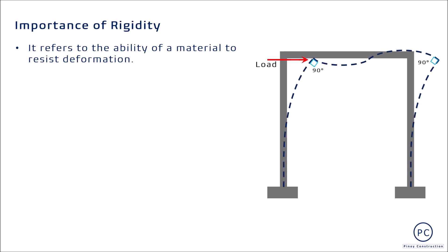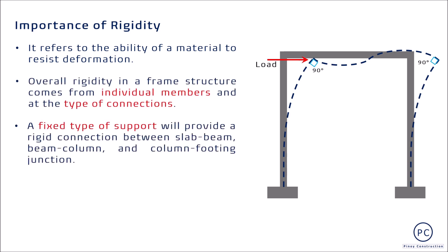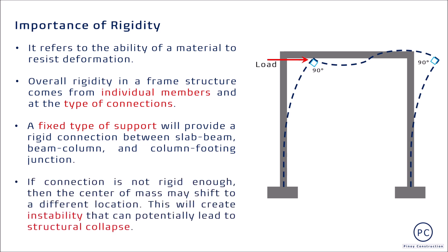Theoretically, hindi dapat na magbago ang angle between beam and column kapag ang buong frame ay subject na sa load na katulad halimbawa ng lateral forces. Kung hindi rigid enough upon the action of the load at magkaroon ng rotation, ang center of mass ng buong structure ay maaaring mag-shift to a different location. This will create instability that can potentially lead to structural collapse.